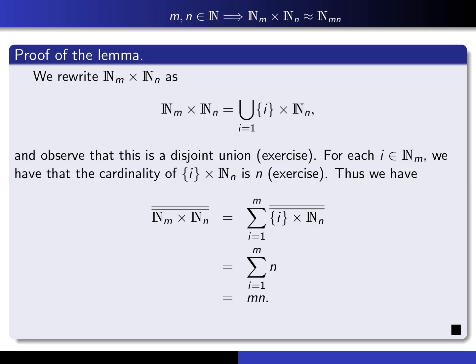For each i in Nₘ — in other words, for each term in this union — I claim that it has cardinality n. That's because it's easy to explicitly write down a bijection from Nₙ into this set. I'll leave it as an exercise for you to write down that explicit bijection. So every set in this disjoint union has exactly cardinality n, and now we apply our theorem on cardinality of finite disjoint unions: the cardinality is the sum of these cardinalities. Each of those is n, so we're adding m copies of n, which is simply m times n. That completes the proof of the lemma.